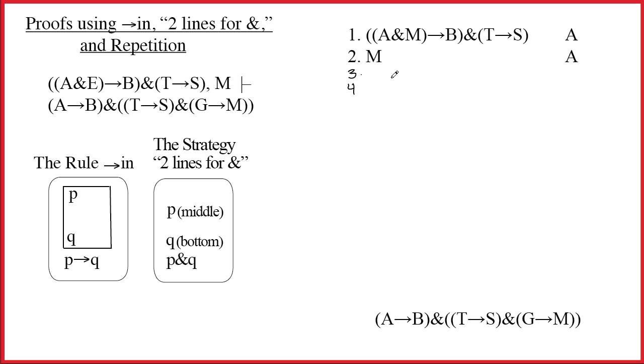We see that line one has an ampersand as its main connective, so let me write A ampersand M arrow B on one line, T arrow S on another line, both justified by one ampersand out. I could check off line one.